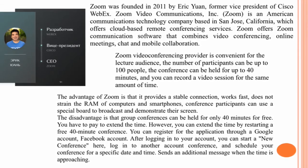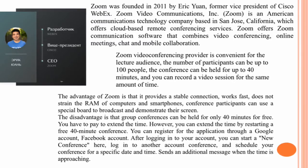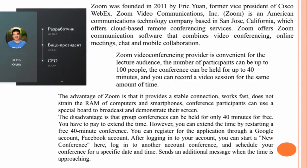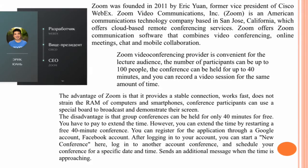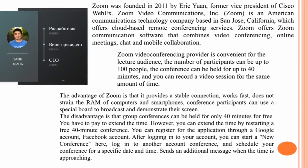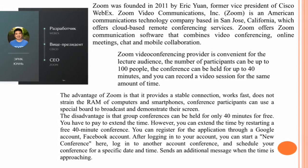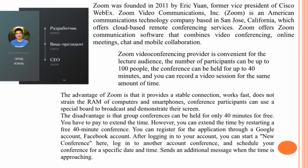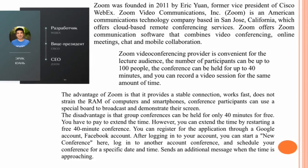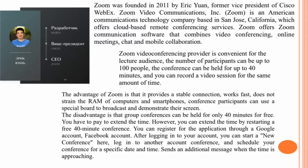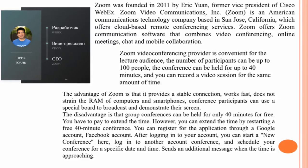The disadvantage is that group conferences can be held for only 40 minutes for free — you have to pay to extend the time. However, you can extend the time by restarting a free 40-minute conference. You can register for the application through a Google account or Facebook account. After logging into your account, you can start a new conference, log in to another conference, and schedule your conference for a specific date and time.